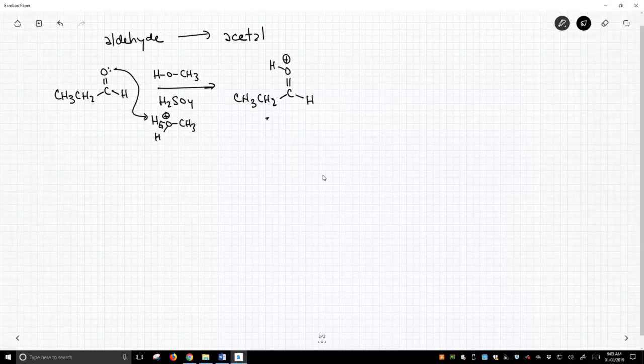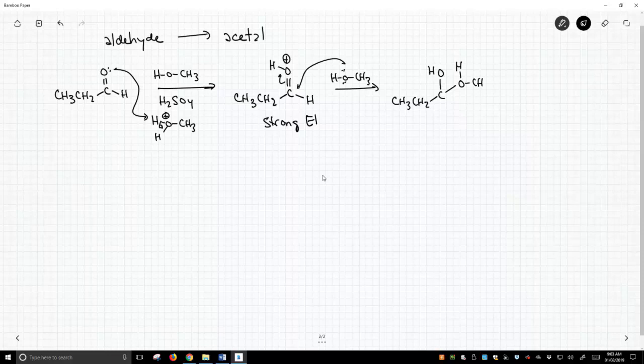And there's our protonated carbonyl. Now we know this is a strong electrophile. And you look around, do we have any weak nucleophiles? Of course we do. We have some methanol. That methanol can attack the protonated carbonyl. I should note that all of these steps are reversible, and that's an important point. So these all can go forwards and backwards.